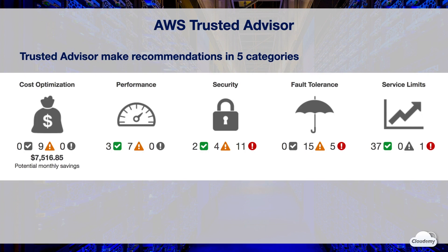This is the AWS console UI of Trusted Advisor. As you can see, Trusted Advisor makes recommendations for your AWS infrastructure under five categories. Cost optimization gives you recommendations that can potentially save you money by highlighting idle resources and opportunities to reduce your bill.